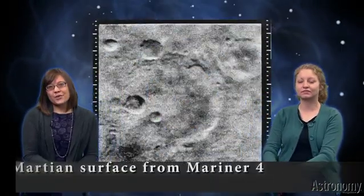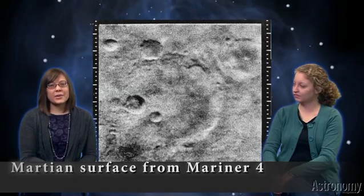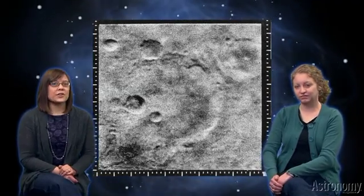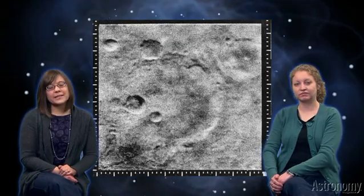Turns out, wait for it, there's no canal system on Mars. We know, you're disappointed. We are too. What appeared from afar to be passageways were actually cracks and craters and dried up riverbeds on the red planet. That's what Mariner 4 saw when it flew by Mars in 1965.